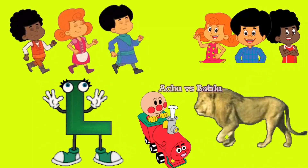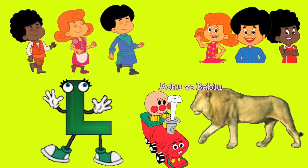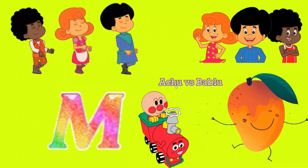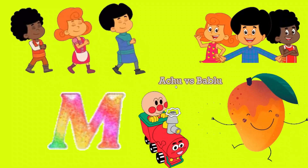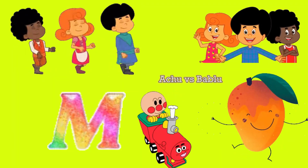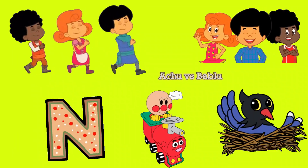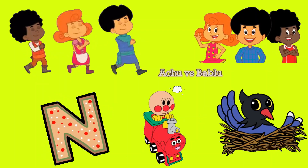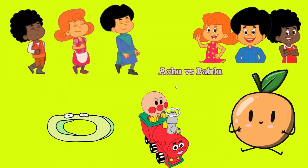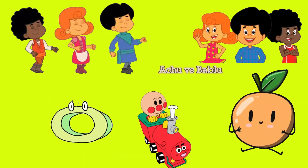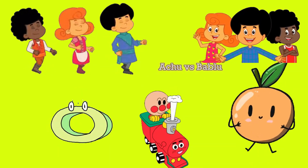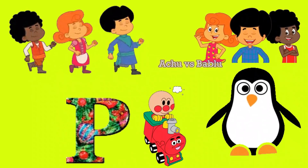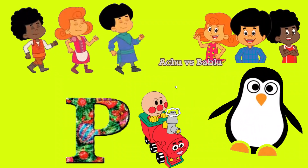L for Lion. M for Mango. N for Nest. O for Orange. P for Penguin.